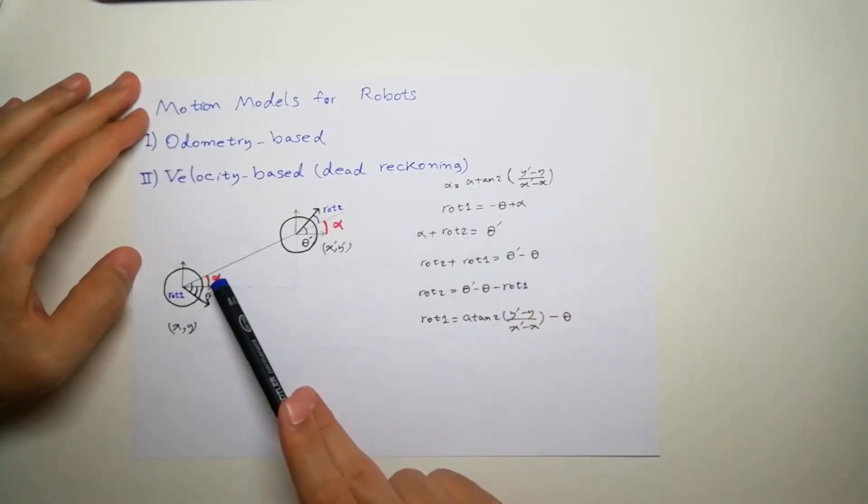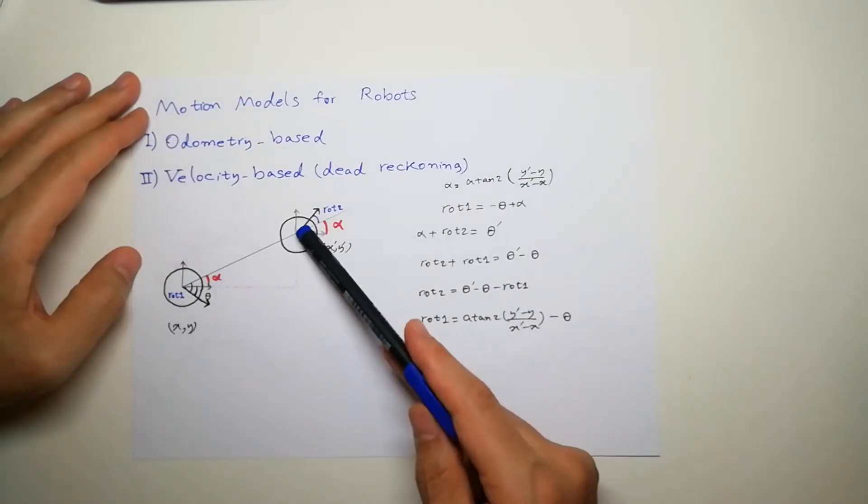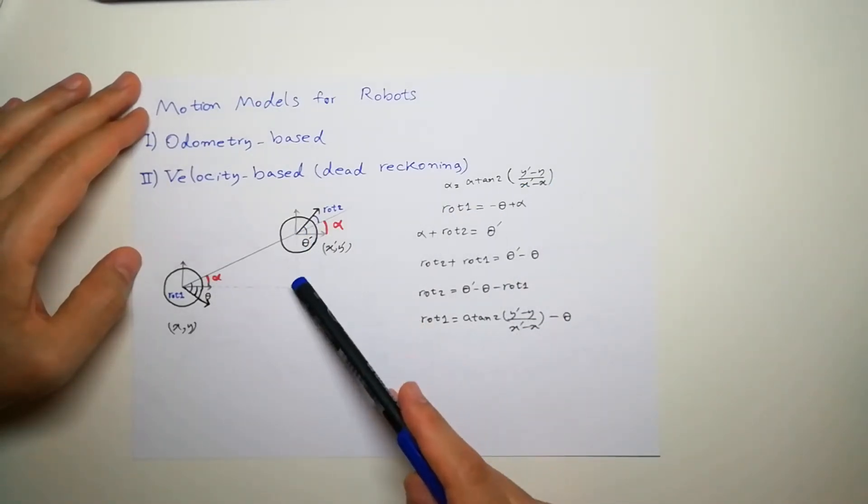So, alpha is equal to arctan of delta y, which is this, over delta x.